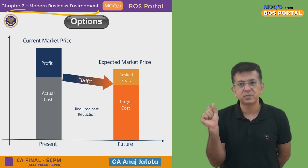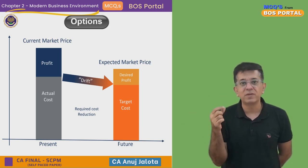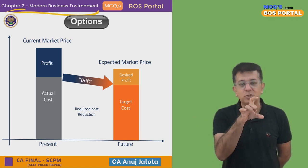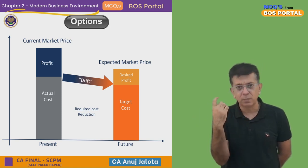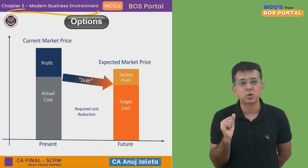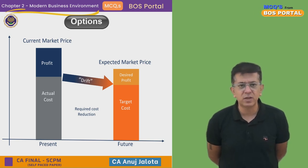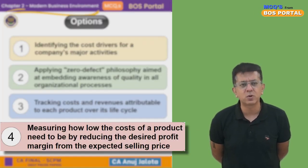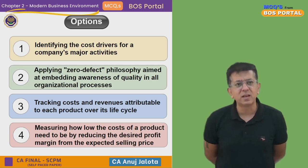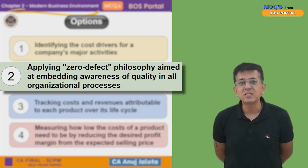From the target price, you reduce the profit that you want and then arrive at the target cost. Currently our actual cost is high; we want to bring it down to the target cost — that is called target costing. So option four is all about target costing. Therefore the answer has to be option two.